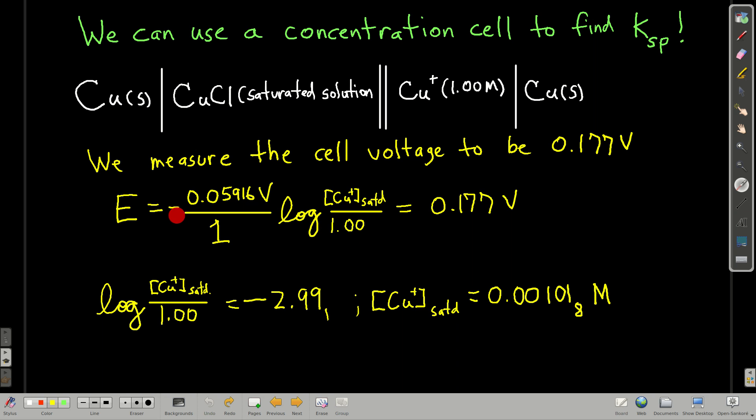So we can do a little bit of rearranging here and solve for the concentration of copper 1 in the saturated solution. So you see we just divided through by negative 0.05916. The one just doesn't do anything, and then we took 10 to both sides of this, multiply through by 1,